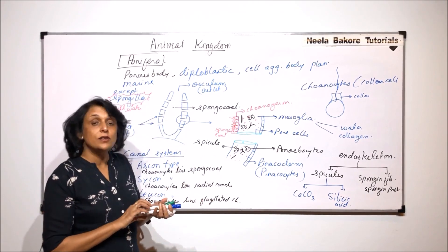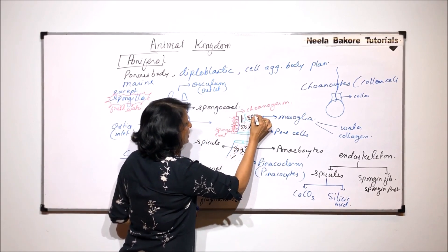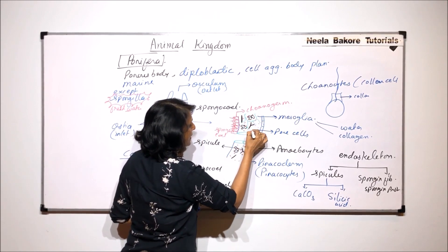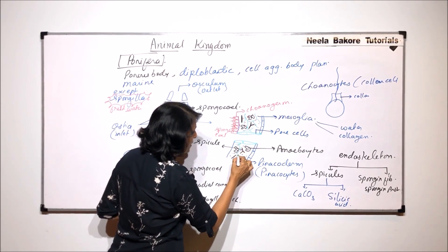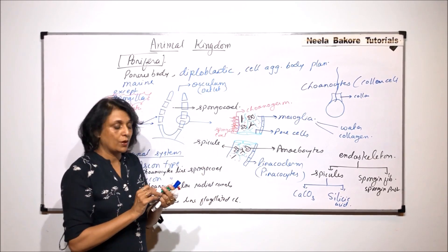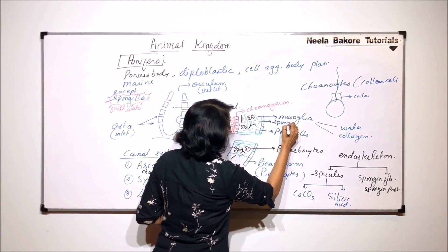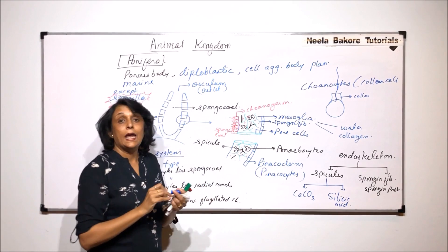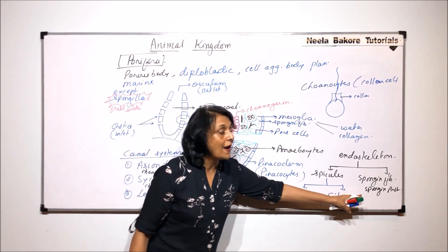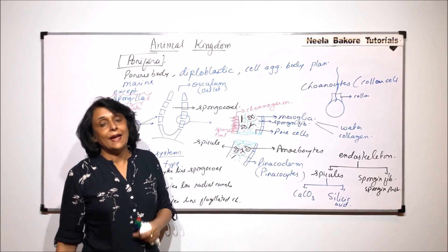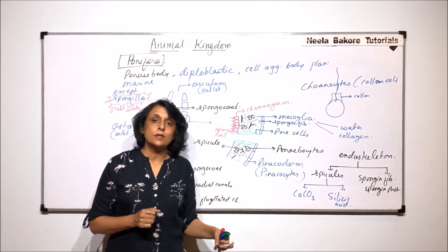Spongy fibers form a thread-like protein network, unlike the pointed spicules. In the bath sponge, Euspongia, only spongy fibers are present, which is why Euspongia can be used for bathing purposes.